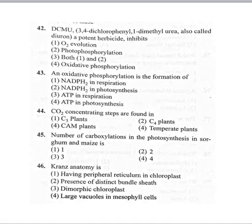Coming to the 46th question: Kranz anatomy is option 1 having peripheral reticulum in chloroplast, option 2 presence of distinct bundle-sheath, option 3 dimorphic chloroplast, option 4 large vacuoles in mesophyll cells. Kranz anatomy can be observed in C4 plants. The presence of distinct bundle-sheath cells is Kranz anatomy — large cells around the vascular bundles of C4 plants are called bundle-sheath cells, and C4 plants having this structure show Kranz anatomy.